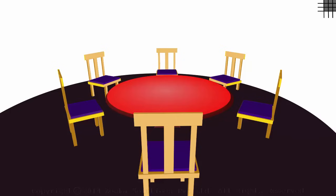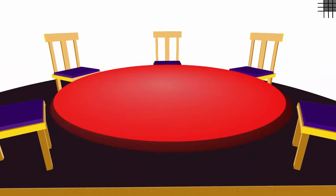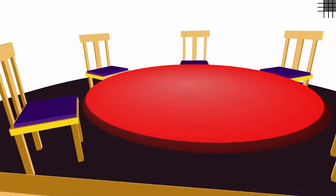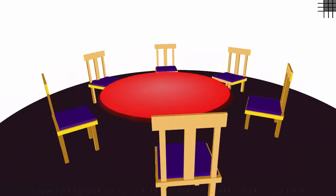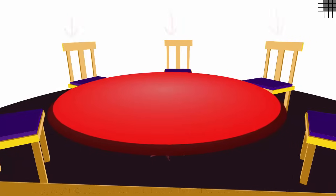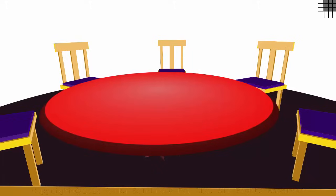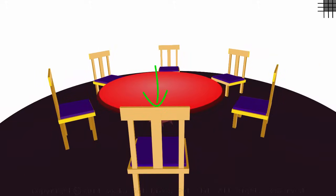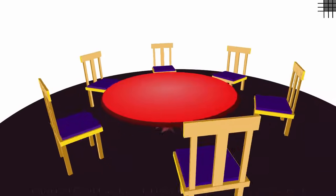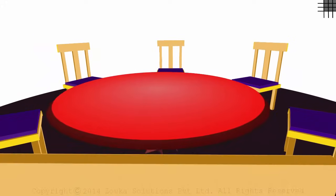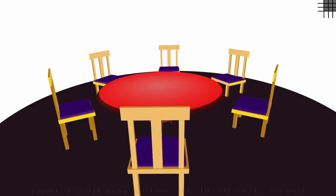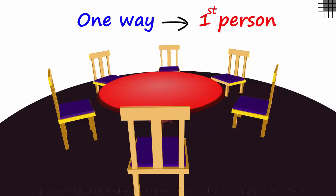To understand this, assume you are the first person. Let's say you sit on one chair — what do you see? You see three chairs in front, one on your left, and one on your right. Now assume you sit on a different chair. The view is still the same: three chairs in front, one on your left, one on your right. Say you sit on a third chair — the view is still the same. This tells us that there is just one way in which the first person can be seated on any of the six chairs.